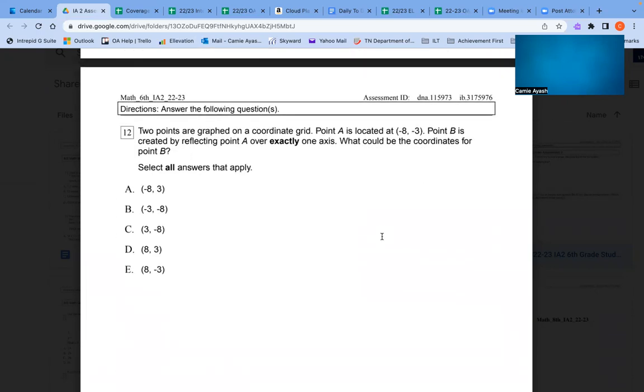Number 12: Two points are graphed on a coordinate grid. Point A is located at (negative 3, negative 8). Point B is created by reflecting point A over exactly one axis. What could be the coordinates for point B? Select all answers that apply. A. (negative 8, 3). B. (negative 3, negative 8). C. (3, negative 8). D. (8, 3). E. (8, negative 3).